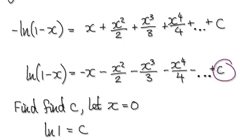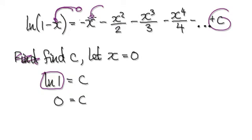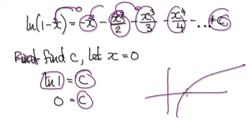So now to find your c, let x equals 0. So when you put 0 into here, it would be natural log of 1. And then put 0 into here, this would be 0. The whole thing here would be 0, 0, 0. And then you've got your plus c. Now, natural log of 1 is 0. So c equals 0.